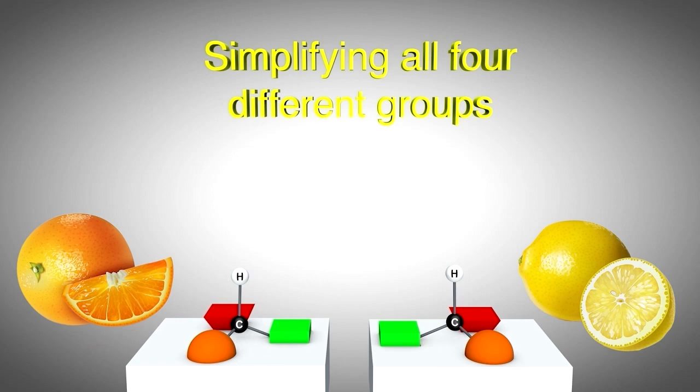Interestingly, the enantiomer on the left triggers the smell of oranges within the receptors of our nose and the enantiomer on the right triggers the smell of lemons.